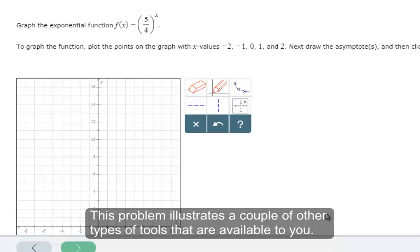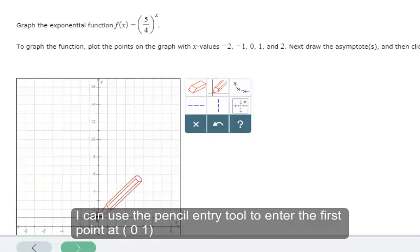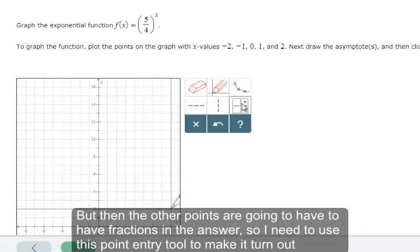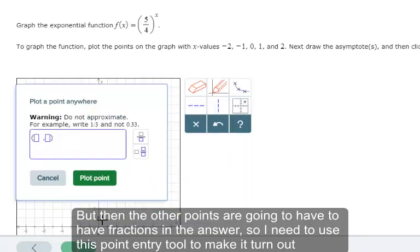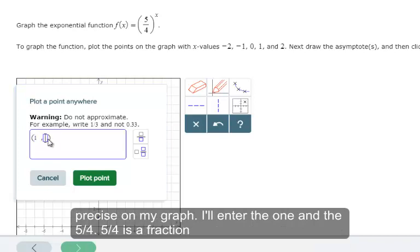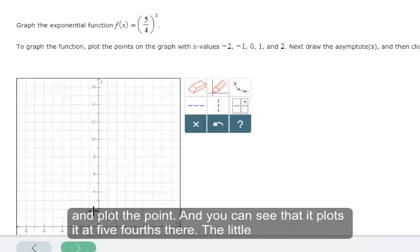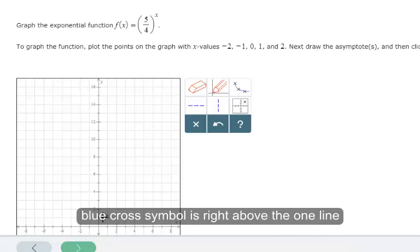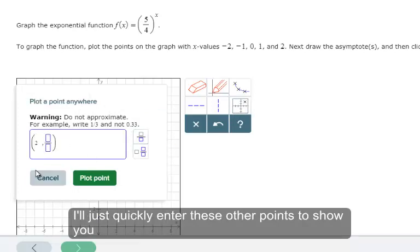This problem illustrates a couple of other types of tools that are available to you. We'll use the point entry tool. I can use the pencil entry tool to enter the first point at zero, one. But then the other points are going to have to have fractions in the answer. So I need to use this point entry tool to make it turn out precise on my graph. I'll enter the one and the five-fourths. Five-fourths is a fraction. So I have to use this fraction button and plot the point. And you can see that it plots it at five-fourths there. The little blue cross symbol is right above the one line.